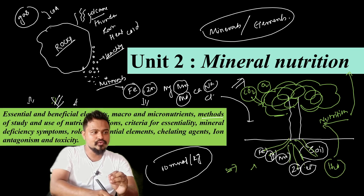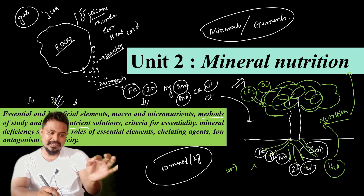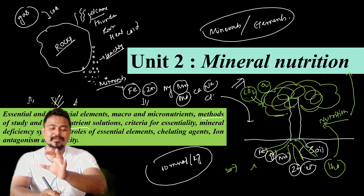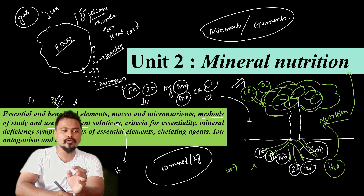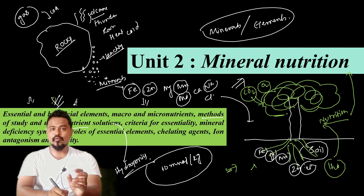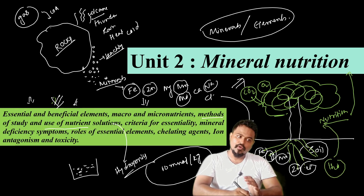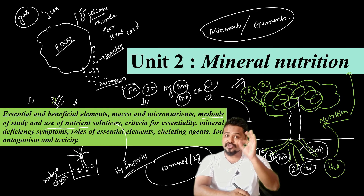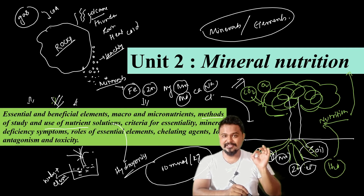Next, we will study the methods of study and the use of nutrient solutions. We will see how many elements are important — which are beneficial and which are essential. The method used is hydroponics, where plants grow in a nutrient solution — a water mineral solution — rather than in soil.